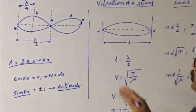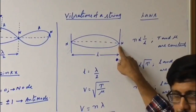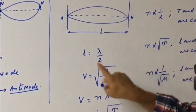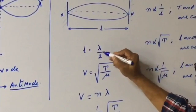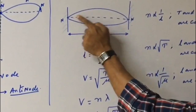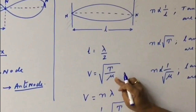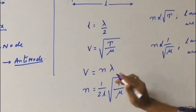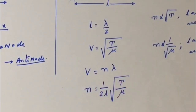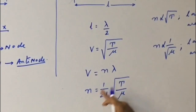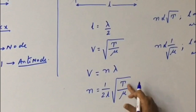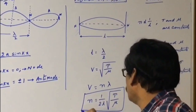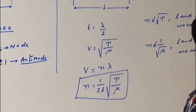When a string is fixed between two supports and vibrates, stationary transverse waves are formed in the string. When it is vibrating in a single loop (fundamental mode), the length of the string equals λ/2, so λ = 2l. We also know the velocity of a transverse wave is v = √(T/μ), where T is the tension in the string and μ is the linear density of the wire. Using v = nλ, we get the frequency of a vibrating string: n = (1/2l)√(T/μ).